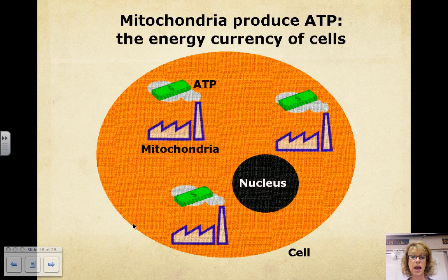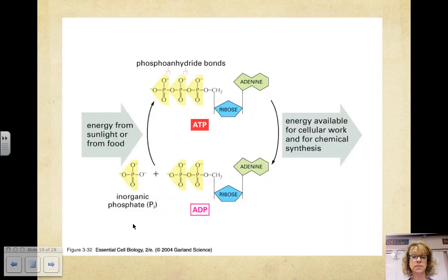ATP powers most cellular work. For example, the generation of light by fireflies or the movement of muscles to power a bike. Right now your nerve cells in your brain are using ATP to help you learn. Cells use energy coupling — this is when energy released from an exergonic reaction drives endergonic reactions. ATP molecules are the key to energy coupling. The breakdown of glucose, which is exergonic, is stored in ATP, and that energy is used for endergonic reactions.